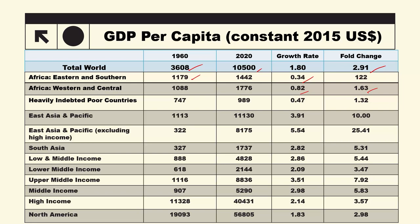The third category is heavily indebted poor countries, and their growth rate is also very low at 0.47%. We discussed in the last module that the growth rate has been very minor in the long run. So 1.8% was the whole world's growth rate, 0.34% was Africa eastern and southern, and 0.47% was the heavily indebted poor countries.